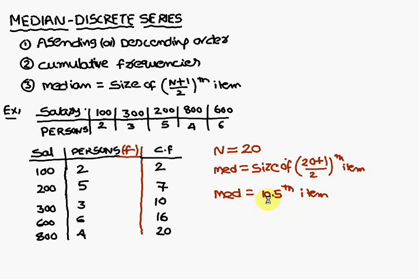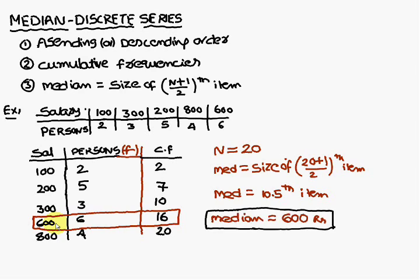So now what you have to do is for this 10.5, where it lies, you have to look in the cumulative frequencies. You have to look for this 10.5 in cumulative frequency, not in the frequency. It does not lie in 7 or 10. So 10.5 means it is more than 10. Therefore, it lies in this one. Now you rectangle this one. So what is the corresponding salary? 600. Therefore, median is nothing but 600 rupees.